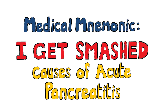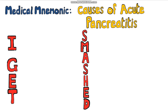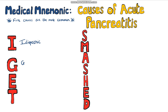Another famous medical mnemonic: I GET SMASHED, for the causes of acute pancreatitis. The most common causes are in the first few letters. First off, we have I for idiopathic, meaning that there's no apparent cause.